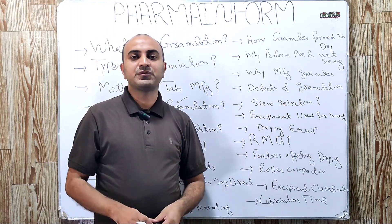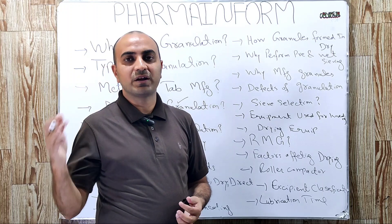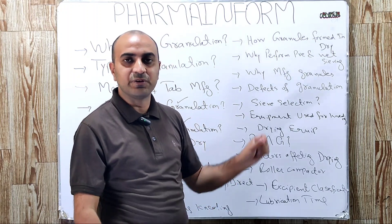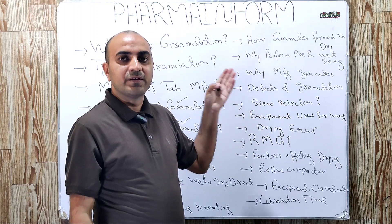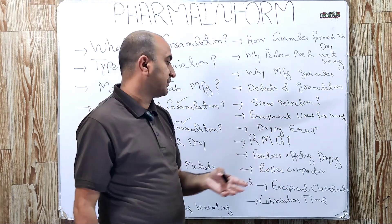For kneading process, which type of equipment are used? We use RMG. The link of RMG is given in description. You can watch complete video regarding RMG. Next one is the sigma mixer, plow mixer, diosano mixer.